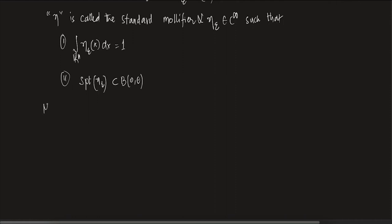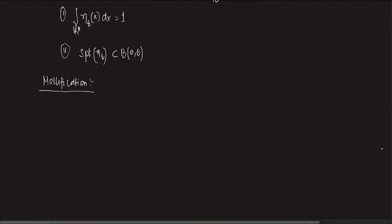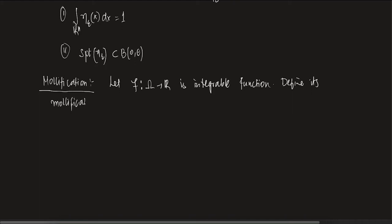Now we define something called mollification. We want to approximate bad functions with good ones. Let f: Ω → ℝ be integrable — for now, you can think of this as a continuous function. We define its mollification f_ε as η_ε convolved with f.